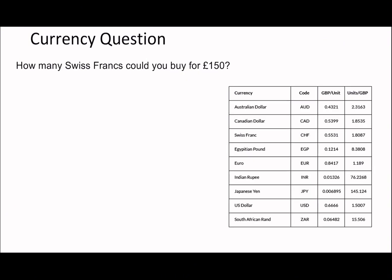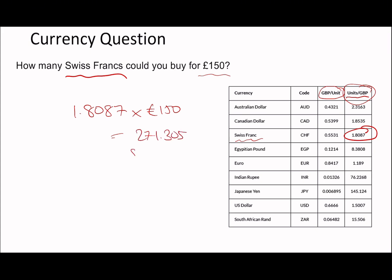Next question: how many Swiss francs could you buy for 150 pounds? Looking at the table, we have GBP per unit and units per GBP. We want how many units you get per pound, so we use 1.8087 units per GBP. It's simply 150 times 1.8087, which gives 271.305 Swiss francs.